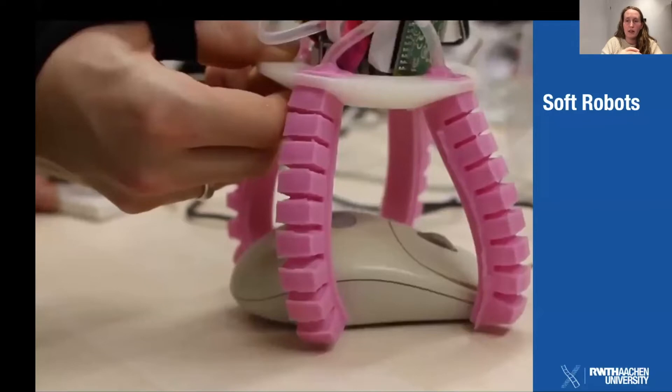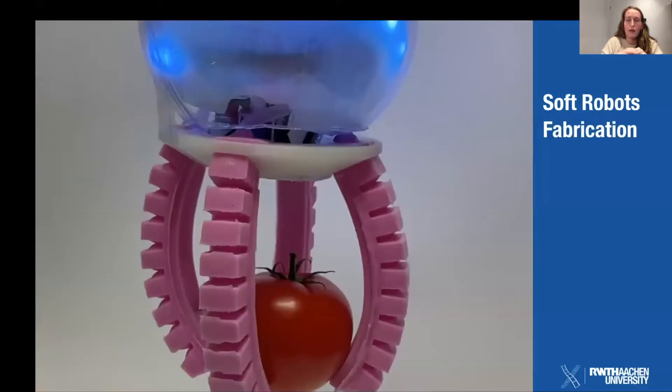Soft robots move organically and are robust under physical stress. They can easily carry out tasks rigid robots struggle with. They are made using accessible materials and technologies such as 3D printing and silicone rubber. This makes them attractive for personal fabrication and for our research.